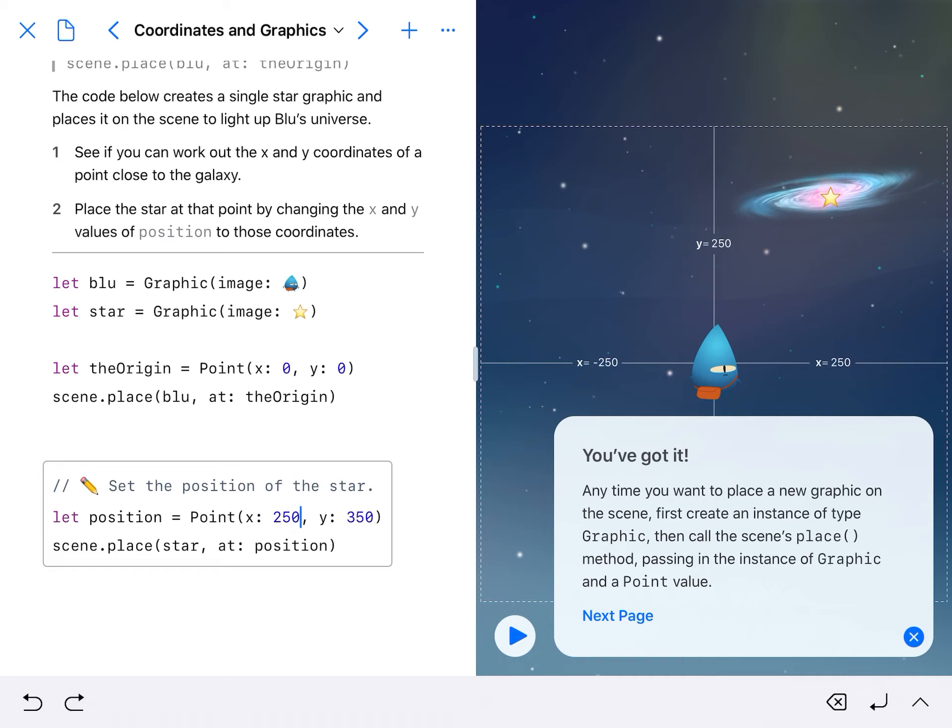If you want to know what this task is, I'm going to read. See if you can work out the x and y coordinates of a point close to the galaxy. Place the star at that point by changing the x and y values of position to those coordinates.